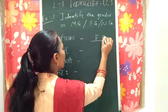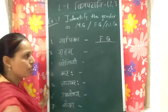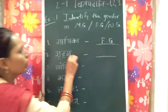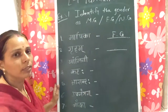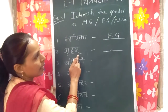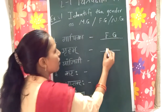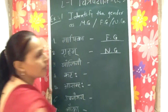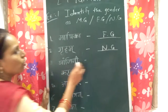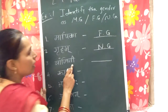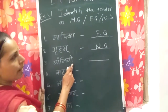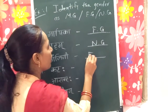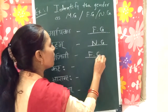So we will write here: feminine gender. Now gruham — this word ends with 'am', so it indicates neuter gender. The word which ends with 'am' is called a neuter word. Next, the word ending with 'e' — this word ends with 'e', so it is feminine gender.